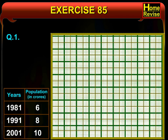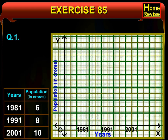Now, we shall first draw the x axis and the y axis. We are going to show the years on the x axis and the population in crores on the y axis. On the y axis, at a distance of 1 cm from O, we shall write 2. Then 1 cm from 2, we shall write 4, then 6, 8, 10.